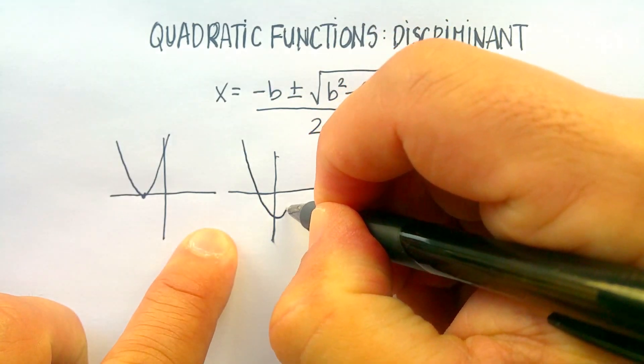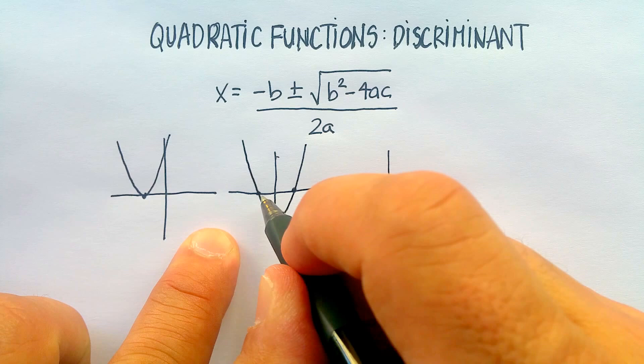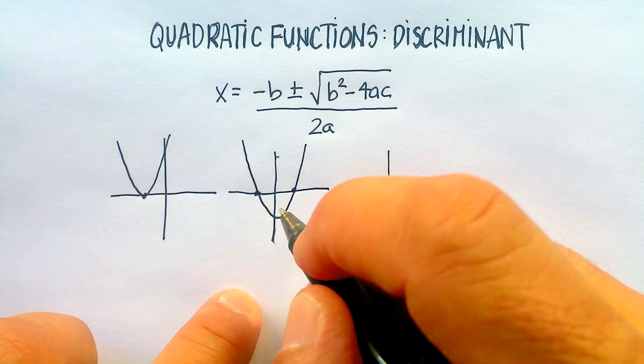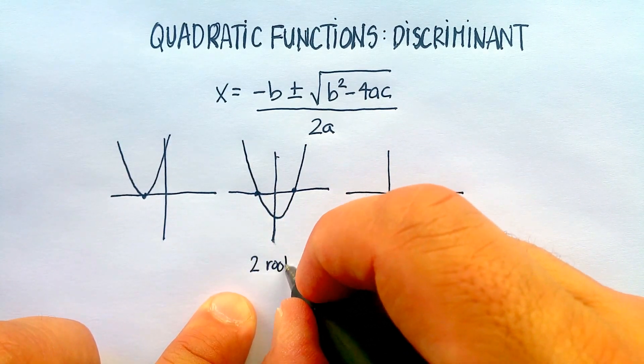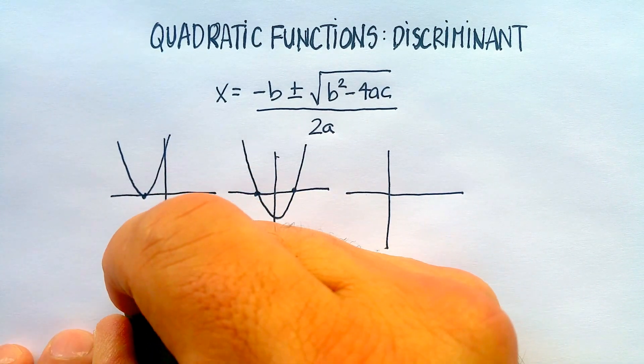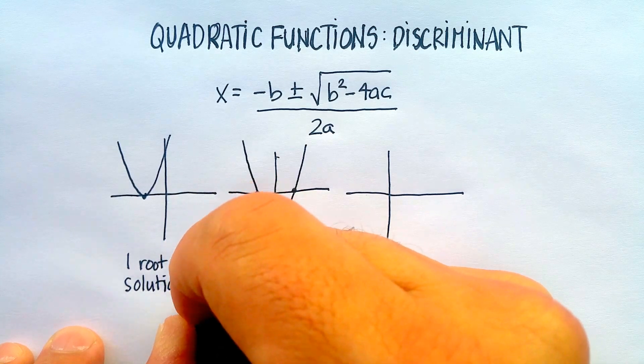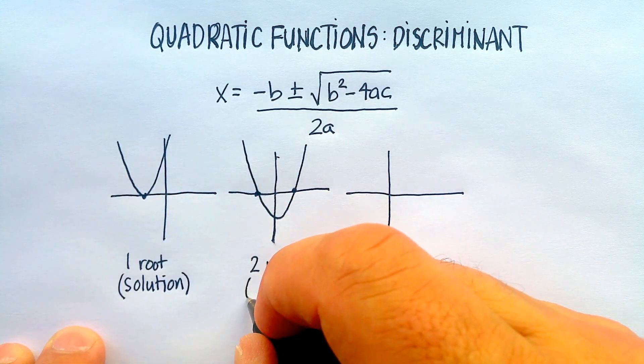I can also have a parabola where it crosses the x-axis twice. That means there are two roots. Here there's one root. Another way to say root is a solution.